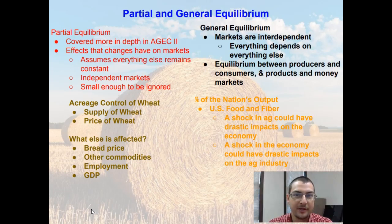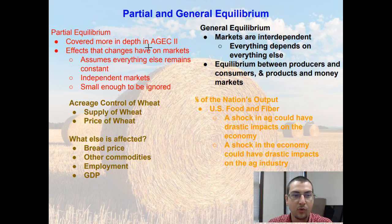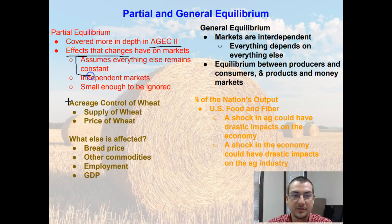Chapter 12 starts off by discussing the difference between partial and general equilibrium. Partial equilibrium is not going to be covered very much in Ag Econ 1 because we're going to cover it more in depth in Ag Econ 2. But essentially what it does is it looks at the effects that changes have on individual markets, assuming that everything else is going to remain constant — a phrase known as ceteris paribus, holding all else constant.